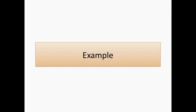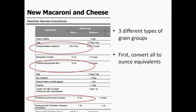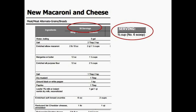Let's take a look at an example using a recipe for macaroni and cheese. Here we can see that we have three different types of grains in one recipe, and we must convert each one differently. We also identify that this recipe yields 50 two-thirds cup servings of macaroni and cheese.